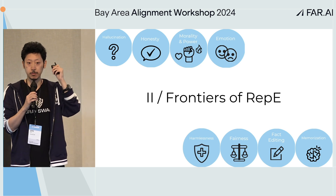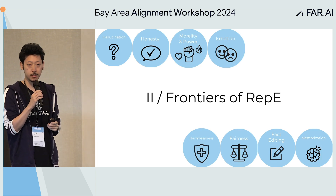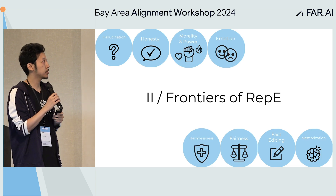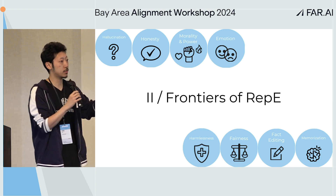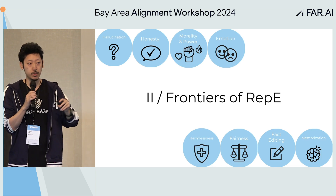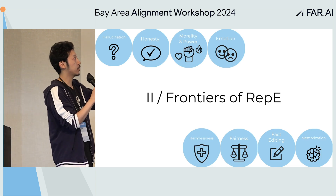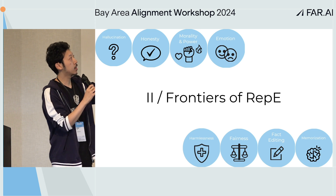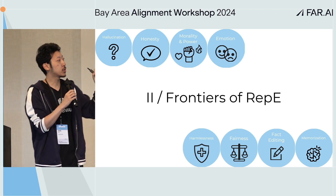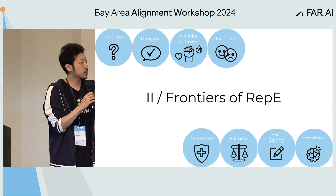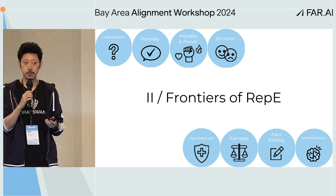Next, I'll talk about direct applications of top-down interpretability on current systems. In the paper, we show that we gain traction on many safety-relevant problems like hallucination, power-seeking tendencies, emotions, harmfulness, fairness, memorization, and so on.